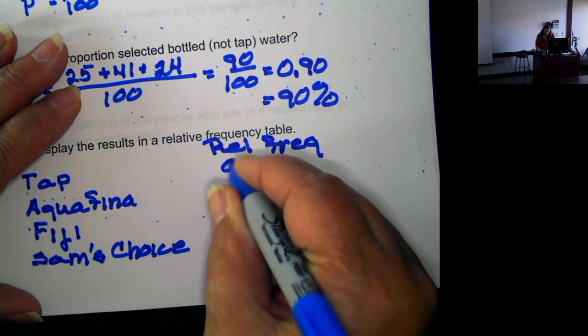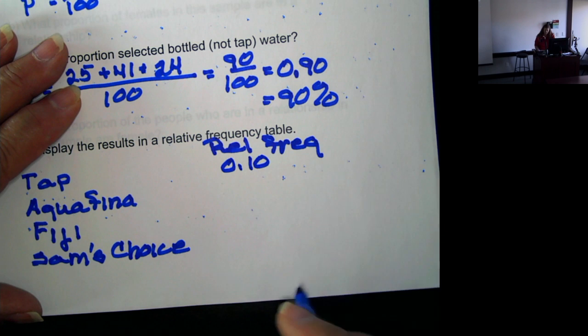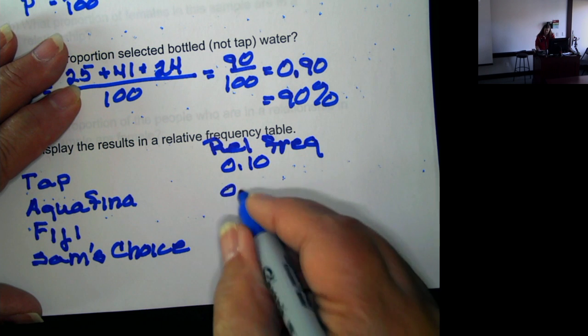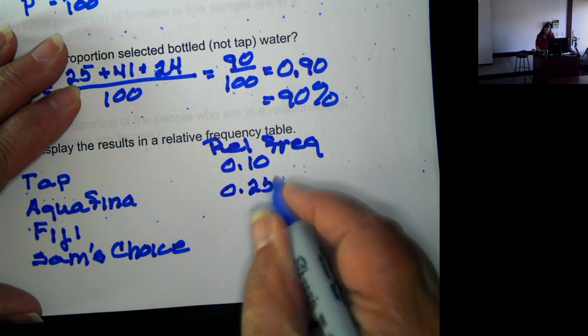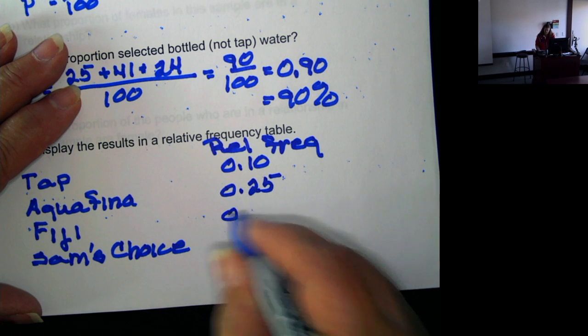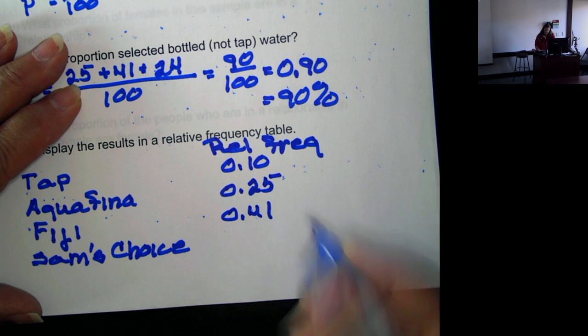For tap, it's 10 over 100, or 0.10. Aquafina we found to be 25 over 100. Fiji is 41 over 100.